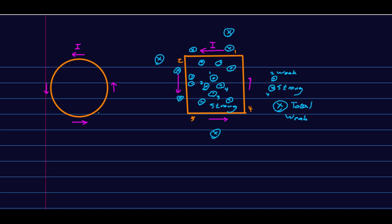You can make all the same arguments for a circular loop, and so for this direction of current, you find a strong outward field inside, and a weak field into the page outside.